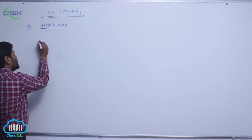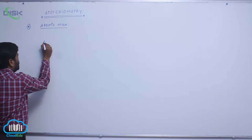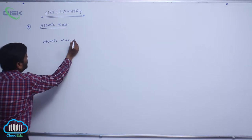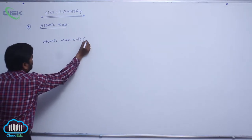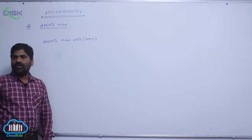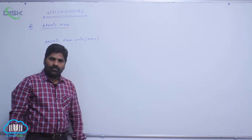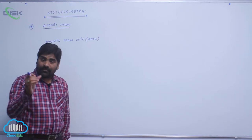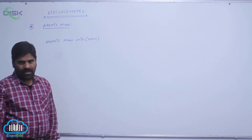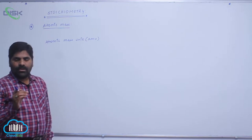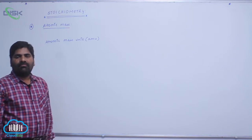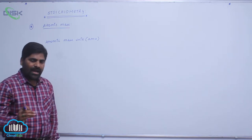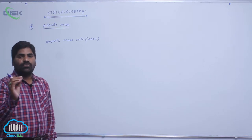The term atomic mass unit is related to isotopic mass. It is represented as amu. Atomic mass unit may be defined as the mass of an element exactly equal to 1 by twelfth the mass of one carbon atom of C-12 isotope.